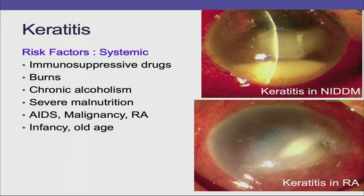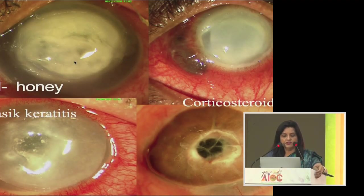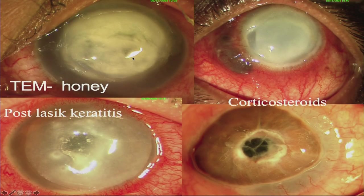Systemic risk factors include use of immunosuppressive drugs, burns, chronic alcoholism, severe malnutrition, AIDS, malignancy, rheumatoid arthritis, and extremes of age — meaning infancy and old age. This is a case of keratitis in a diabetic patient, and this is a case of keratitis in rheumatoid arthritis, which tends to be peripheral. Other causes include traditional eye medicine or honey, which is common in rural areas, post-LASIK keratitis, and thinning or perforation from injudicious use of topical steroids.